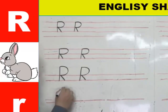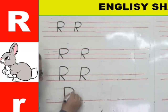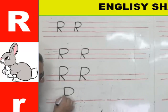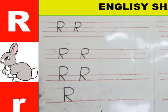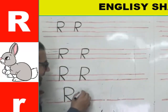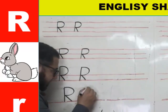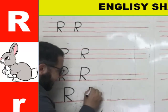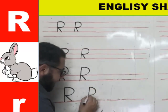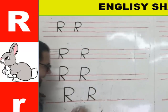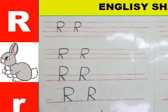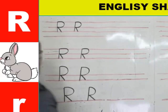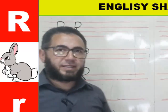For R capital on a single line: start from above, curved line to the middle, then a diagonal line down. So: from above, curved line to the middle, then the diagonal line. Now let's see how to write the small r.